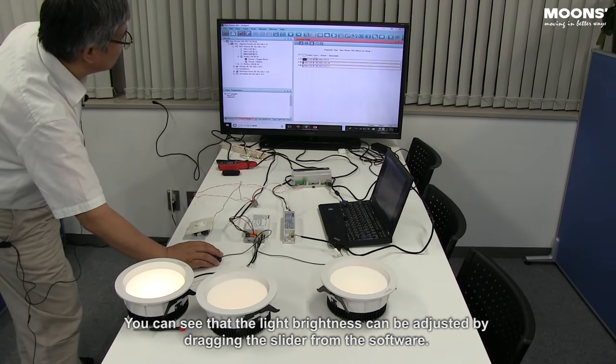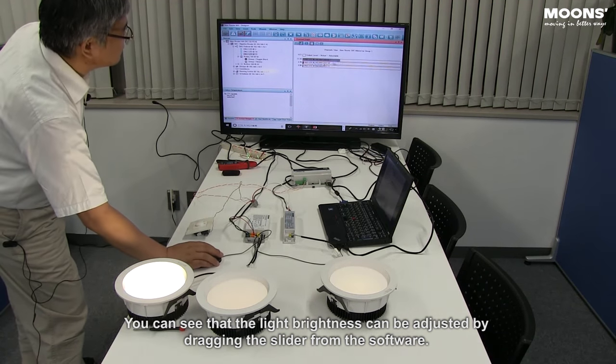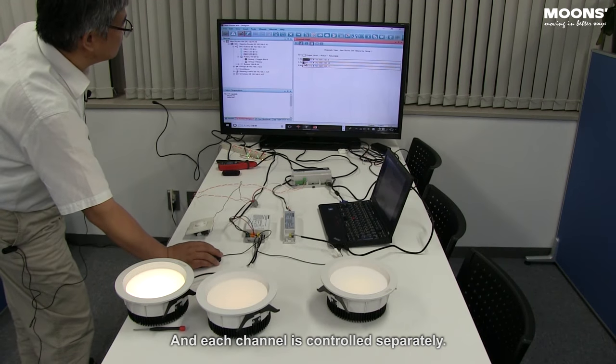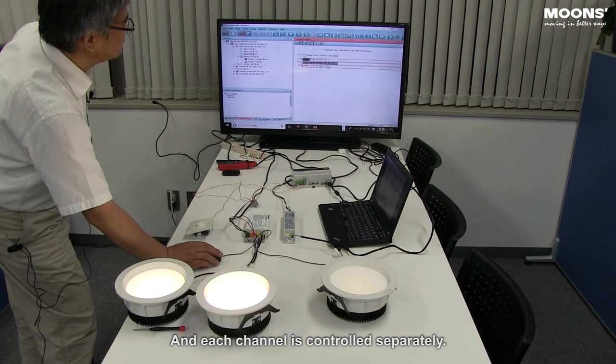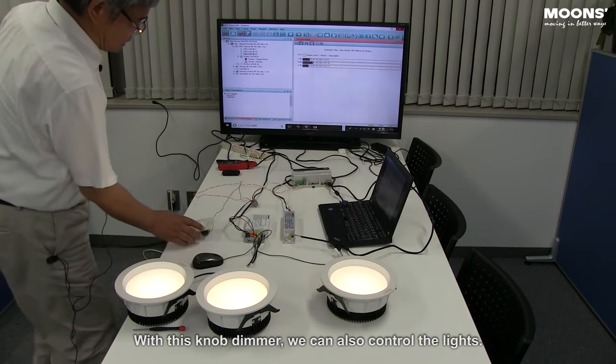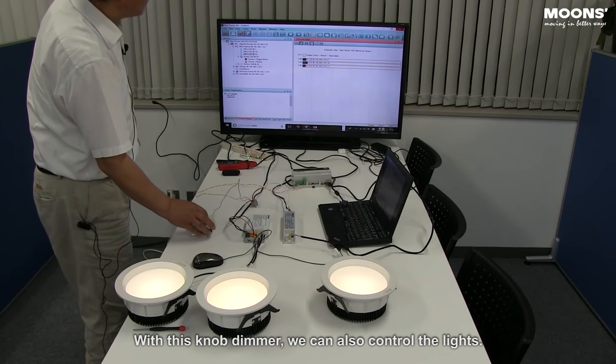You can see that the light brightness can be adjusted by dragging the slider from the software. And each channel is controlled separately. With this knob dimmer, we can also control the lights.